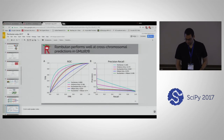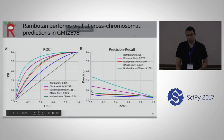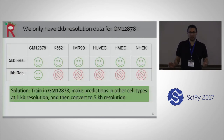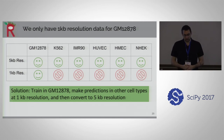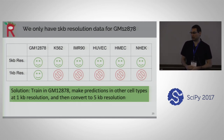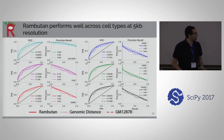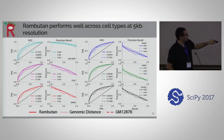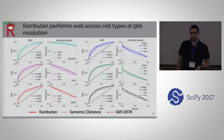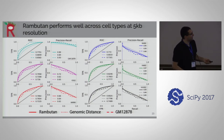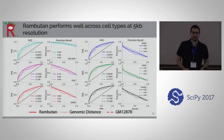To speed through the validation — we want to validate our model across cell types, but we only have a 1 KB resolution map for GM12878. So we downsample our predictions from 1 KB resolution to 5 KB resolution. You can see the Rambutan predictions in the solid line, the dotted line for genomic distance, and the GM12878 contact map alone as a baseline. We have to do better than that baseline. It seems like we do better than every cell type except for NHEK, which is a constant outlier not just in these analyses but across multiple labs in this project.